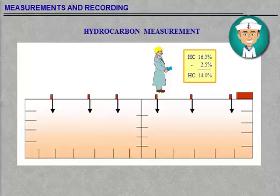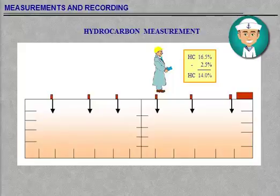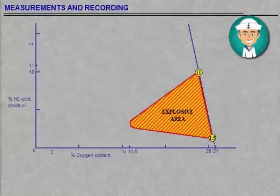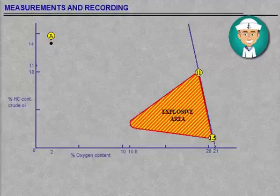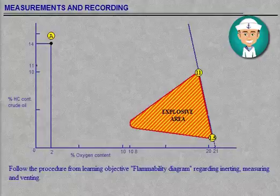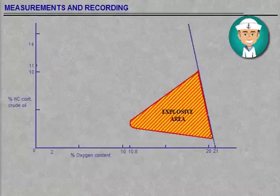Because we are using the RECON 17HC in an inerted atmosphere, we are instructed to reduce the reading by 2.5%. Average hydrocarbon content reading equals 16.5% by volume. Average measured hydrocarbon content equals 14.5% by volume.